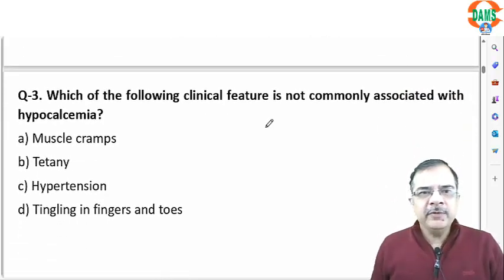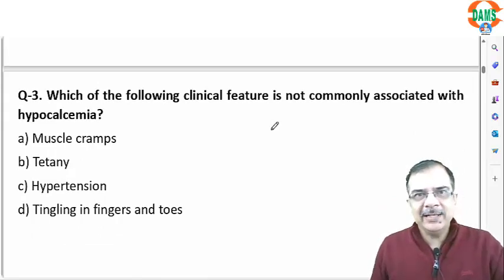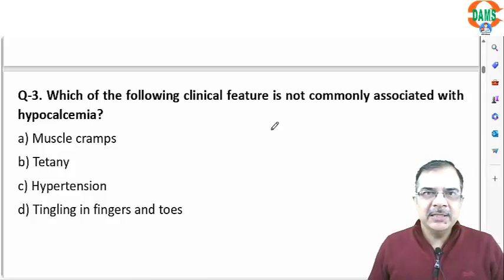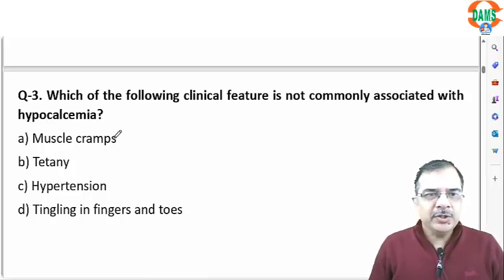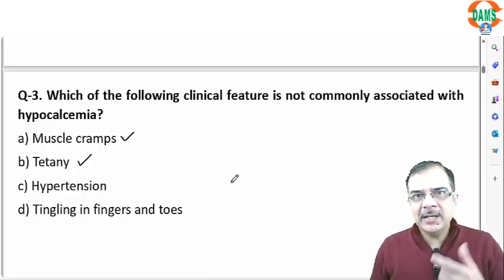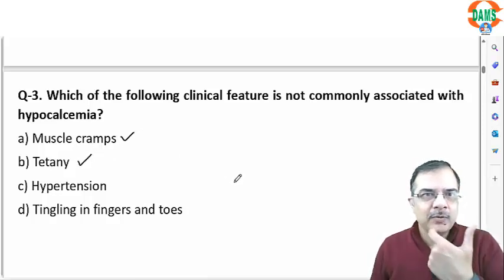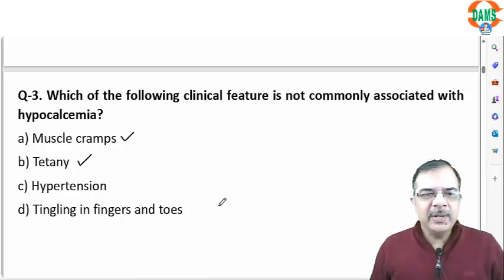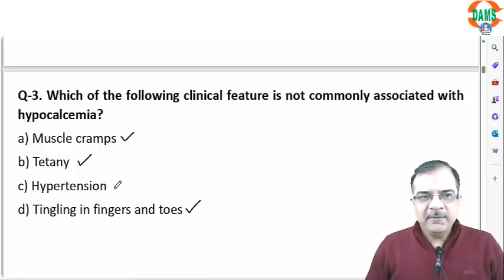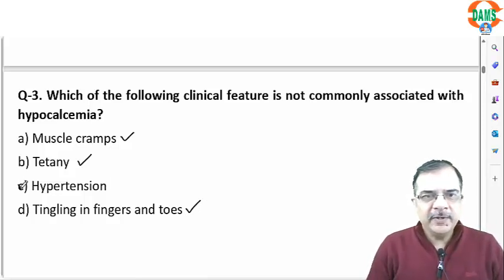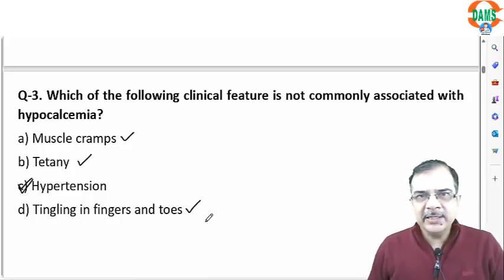Question 3: which clinical feature is not commonly associated with hypocalcemia? Hypocalcemia leads to increased muscle irritability and excitability. The patient will have muscle cramps, tetany, and perioral neuropathy symptoms or tingling sensation in fingers and toes. However, hypertension is not a feature of hypocalcemia.